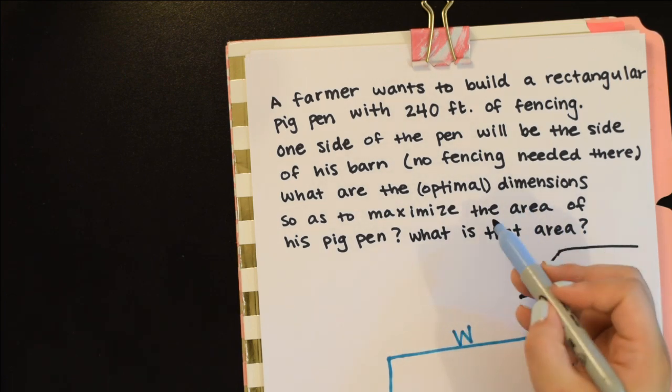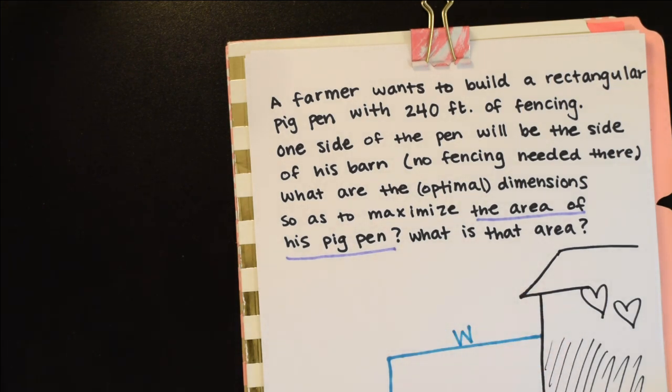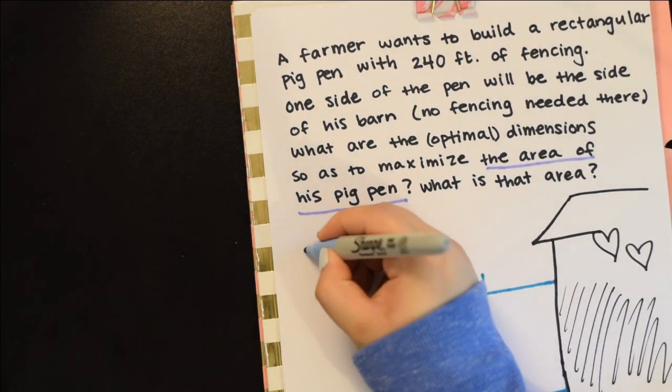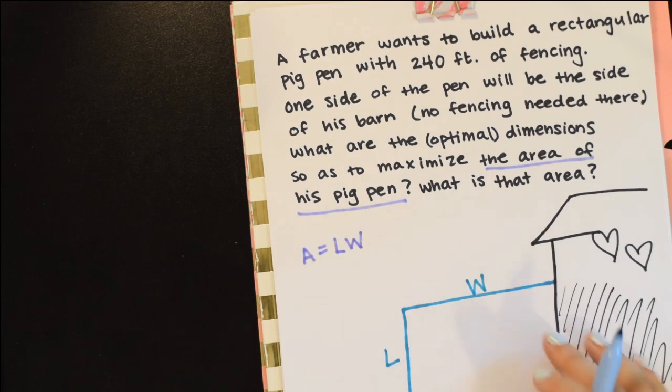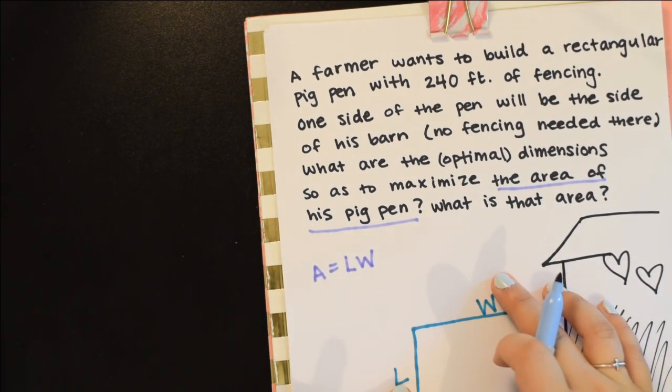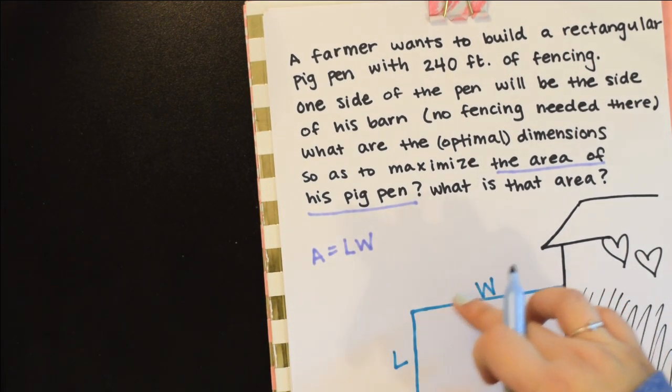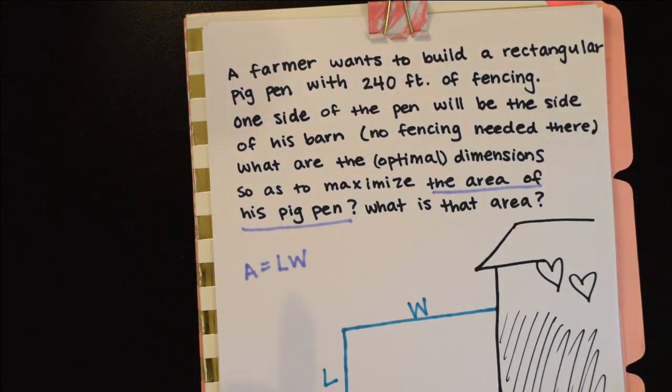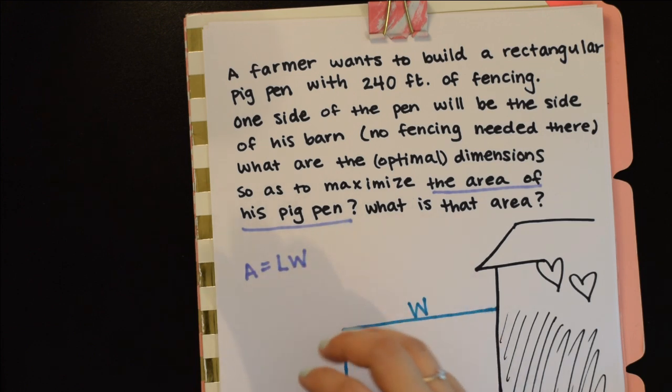We know that we want to maximize the area of his pig pen. So for these kinds of questions, I suggest that you start with what you are trying to maximize or minimize. In this case, the area of his pig pen. Make an expression for what you're trying to do.